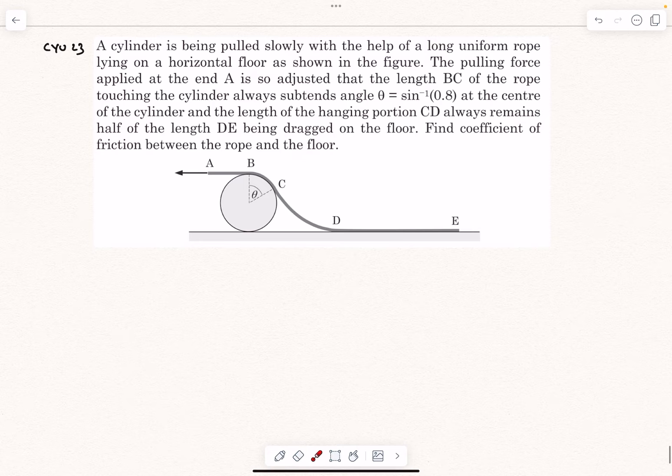We have a cylinder that is being pulled slowly with the help of a long uniform rope lying on the horizontal floor as shown in the figure. The pulling force applied at end A is so adjusted that the length BC of the rope touching the cylinder always obtains an angle of theta. This angle always remains theta during the course of the motion, and the length of the hanging portion CD always remains half of the length DE. So this length over here always is half of this length over here. The question is to find the coefficient of friction between the rope and the floor.